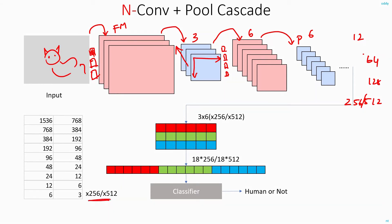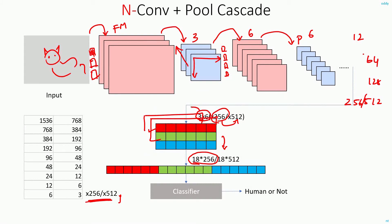When the final 3x6 feature map output has a depth of 256 or 512, you don't have just one 2D array — you have 256 or 512 such arrays stacked behind each other. When you stretch or flatten this, if the depth is 256 you get a one-dimensional feature vector of size 18x256, since 3x6 equals 18. If the depth is 512, the input feature vector to your classifier is correspondingly larger.